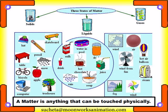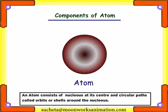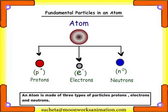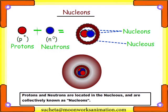Wind from a fan or air. An atom consists of a nucleus at its center and circular parts called orbits or shells around the nucleus. An atom is made of three types of fundamental particles called protons, electrons, and neutrons. Protons and neutrons are located in the nucleus and are collectively known as nucleons.